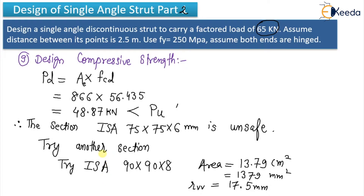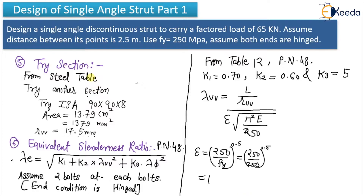You will have to repeat this procedure. On the safe side, you should take a section of higher dimension so that your section will be safe. For practice, I took the section 75×75×6 mm but it was unsafe. Now I am trying another section: ISA 90×90×8. The properties taken from the steel table are: area = 1379 mm² and r_vv = 17.5.